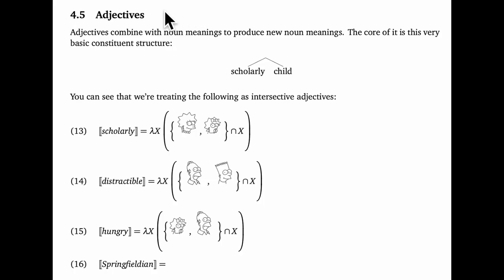Okay, on to adjectives. Here we step up the complexity even more in terms of using functions. Intuitively, our adjective meanings combine with noun meanings to produce new noun meanings. So we're thinking initially about basic structures of the sort we've seen before, like scholarly child.